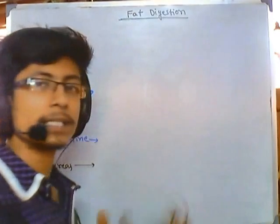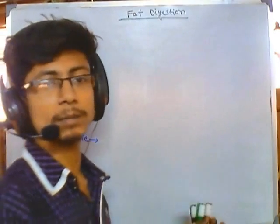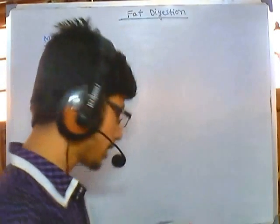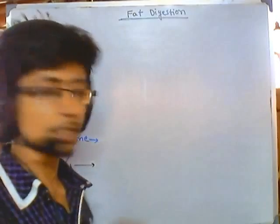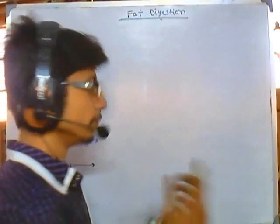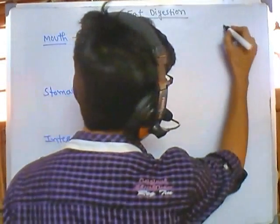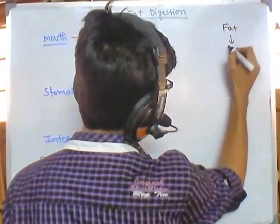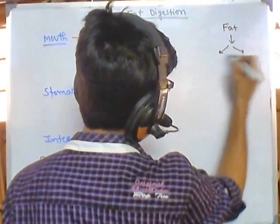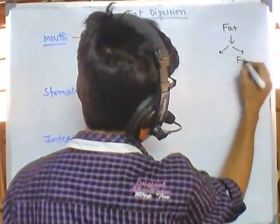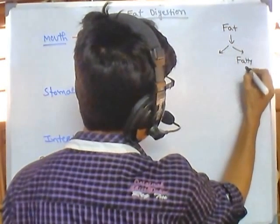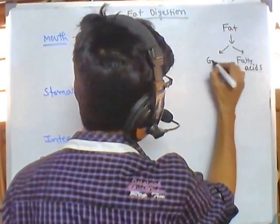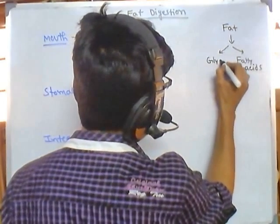Still, there are other techniques inside our body to break down fat into smaller fragments. When we talk about fat, it is made up of two major constituents: one is fatty acids, and the other is the backbone called glycerol.